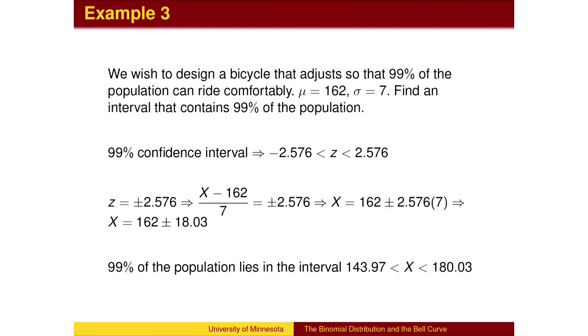Here is another example. We wish to design a bicycle that is adjustable so that 99% of the adult female population can ride comfortably. The z-scores for the 99% confidence interval are plus and minus 2.576 standard deviations from the mean. We will be very close to 99% of the population being able to ride our bike if it adjusts from 144 to 180 centimeters.